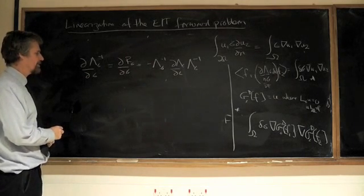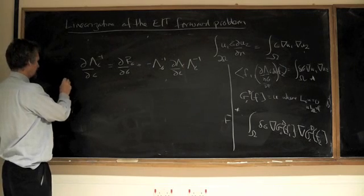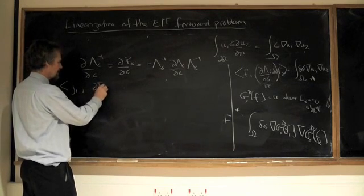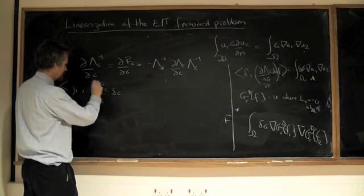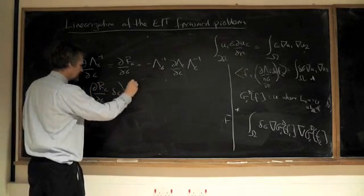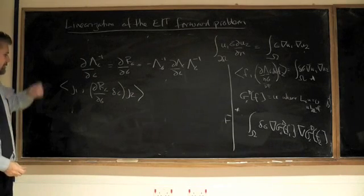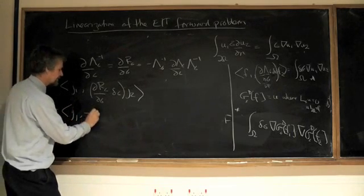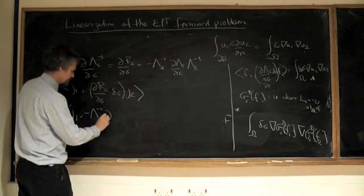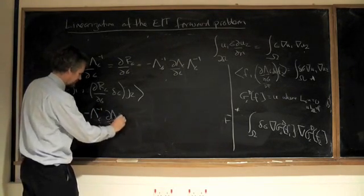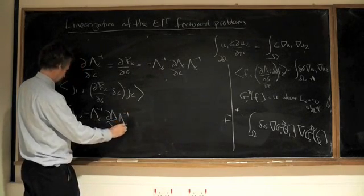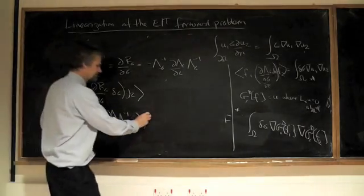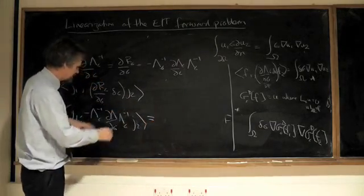And so what I'd like to do is to take two currents j, and I'd like to work out j1 d r sigma by d sigma applied to delta sigma j2. j2, j1 and j2 are my sort of test currents I'm going to put in, and that's j1 minus lambda sigma inverse.